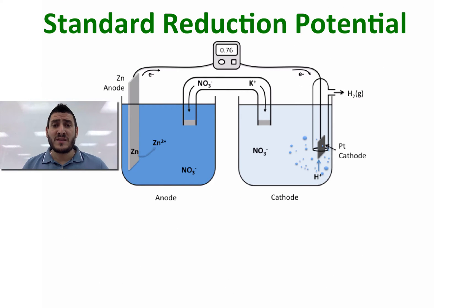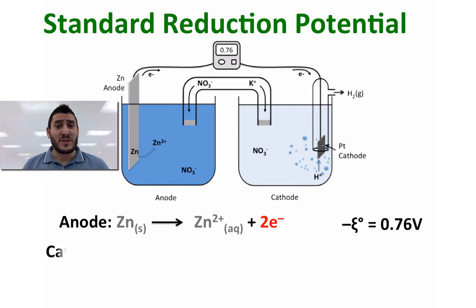The voltmeter is indicating a cell potential of 0.76 V. If we assume that the standard reduction potential of hydrogen is equal to zero, therefore the standard reduction potential of zinc is going to be equal to negative 0.76 V.